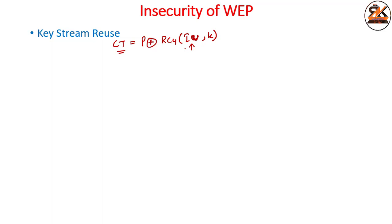Sometimes the IV is kept constant — some vendors hardwire it. When you have a fixed key and a constant IV, you get the same key stream every time, which is a problem. After some time the key repeats, and the IV is only a 24-bit number, which is short and can be compromised.